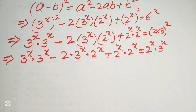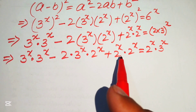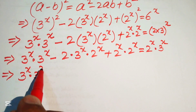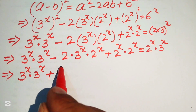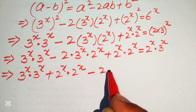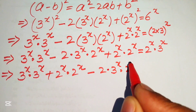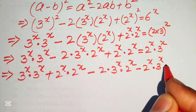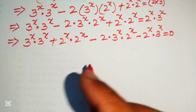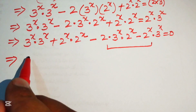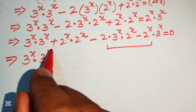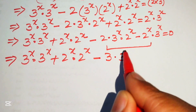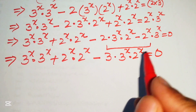We move the right-hand side term to the left: 3^x · 3^x + 2^x · 2^x - 2·(3^x)·(2^x) - 2^x · 3^x = 0. Combining the last two terms gives: 3^x · 3^x + 2^x · 2^x - 3·(3^x)·(2^x) = 0.